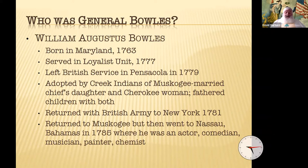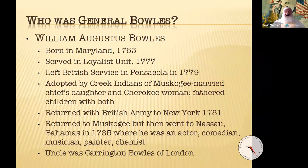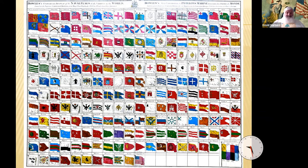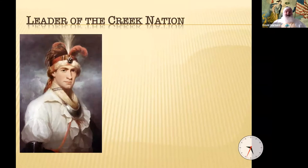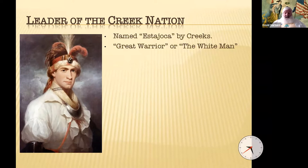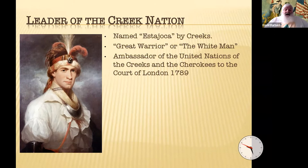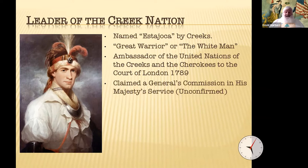Bowles returned to Muscogee briefly, then went to Nassau, Bahamas in 1785, where he supported himself as an actor, comedian, musician, painter, and chemist, despite having no training in any of these fields, besides having a reputation as a warrior. His uncle was Carrington Bowles of London, famous for his period flag charts and maps — for example, his 1783 Naval Flags of the World. Bowles had many different names, but his primary name was Estejoka, given to him by the Creeks. He said it meant 'great warrior,' but others interpreted it simply as 'the white man.' Although much of his official history appears exaggerated or fabricated, he appears to have served as a possibly unofficial ambassador of the United Nations of the Creeks and the Cherokees to the Court of London in 1789–1790. He further claimed a general's commission in His Majesty's service, but this is unconfirmed.